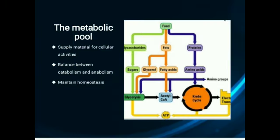Now the last topic is the metabolic pool. This diagram shows how food — which may be polysaccharides, fats, and proteins — is converted into basic units and how these units pass into glycolysis, acetyl-CoA, the Krebs cycle, and the electron transport chain to produce ATP. The metabolic pool maintains a balance between catabolism and anabolism, maintains homeostasis, and supplies material for cellular activities.